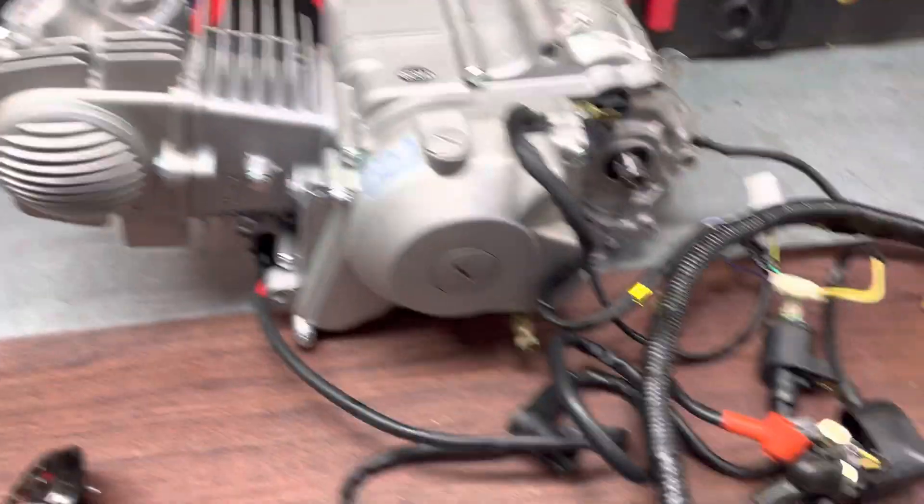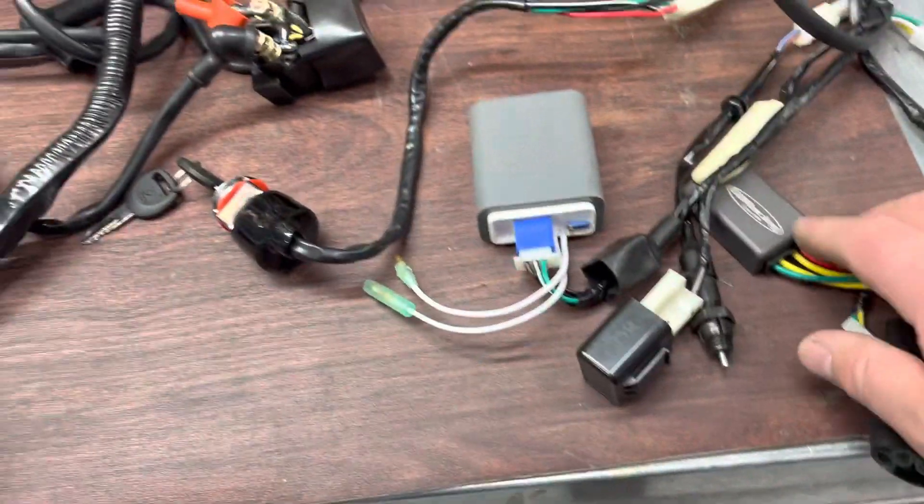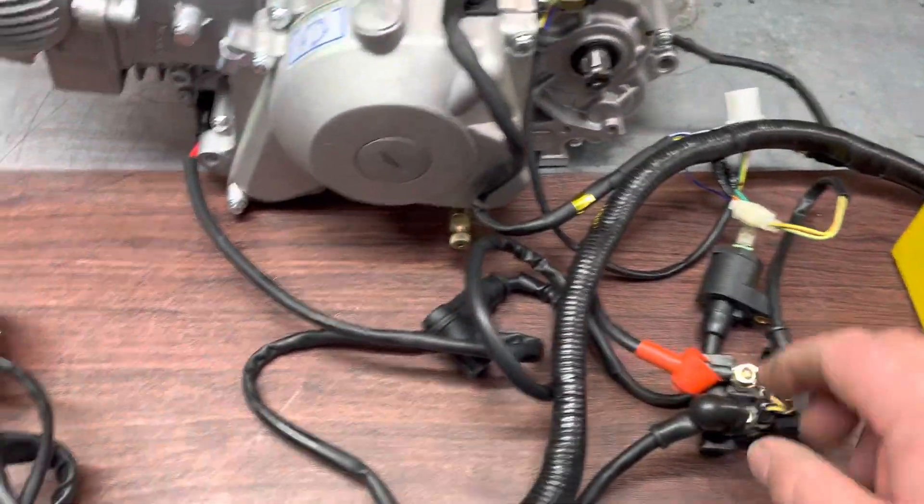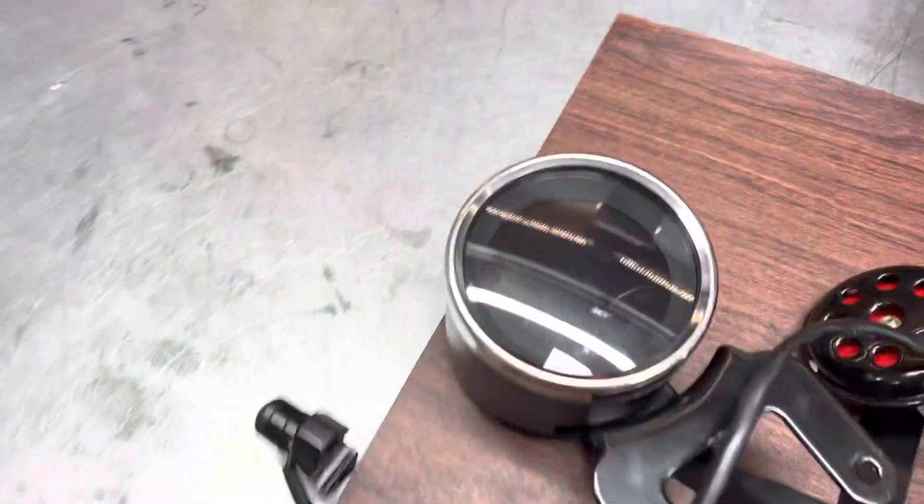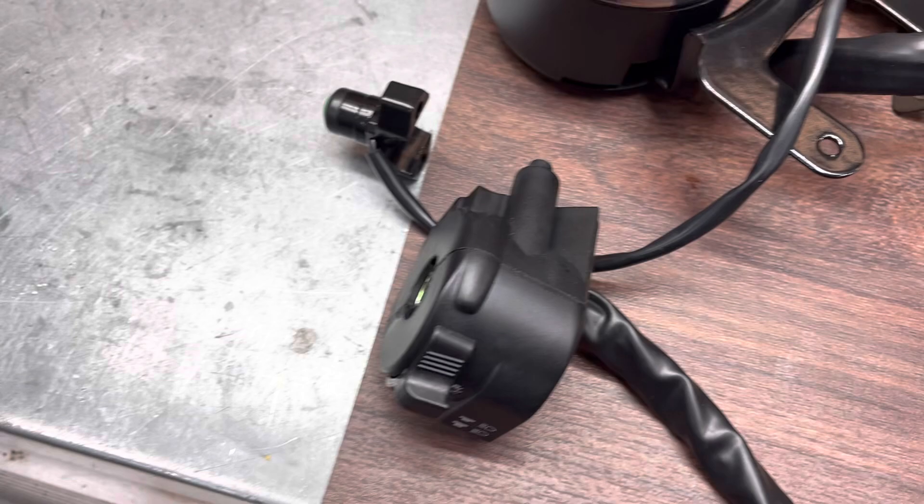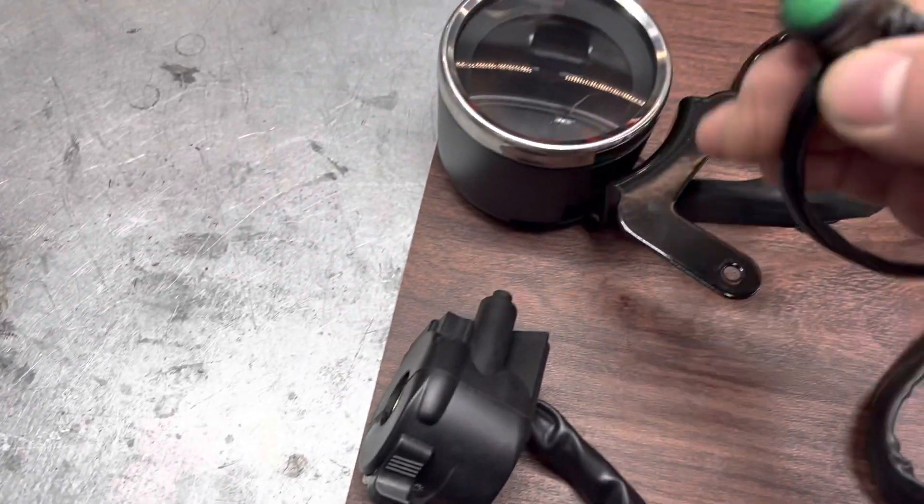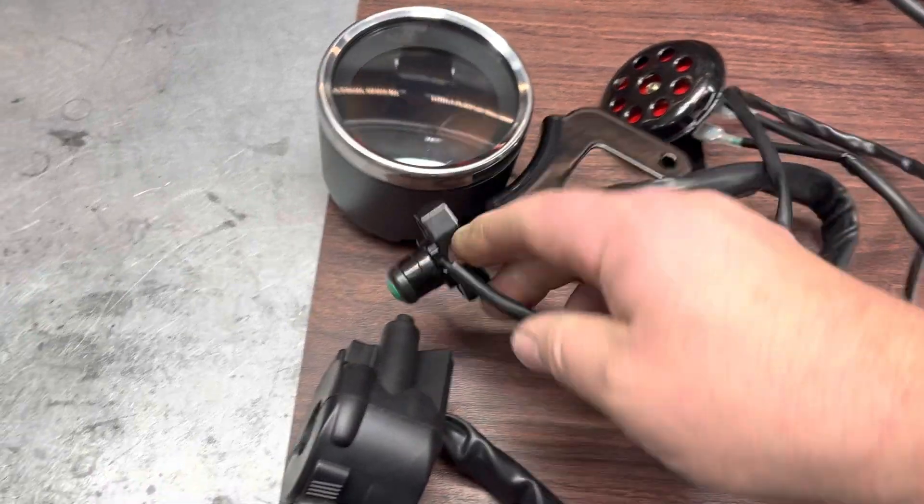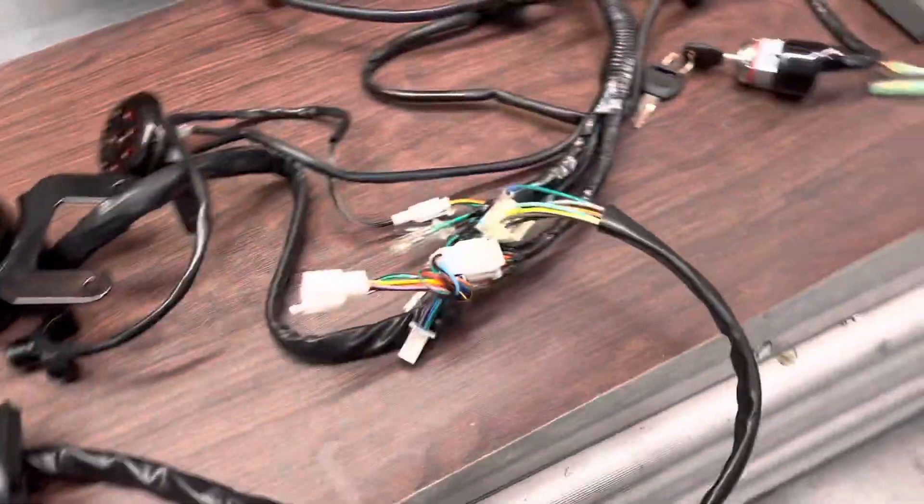It's electric start 140 semi-automatic. He ordered the regulator and CDI that come with the engine, along with the solenoid, coil, CDI, speedo, switch gear, and CBR-type start button switch that clamps onto the back of the brake master because he's putting a disc brake front end on it.